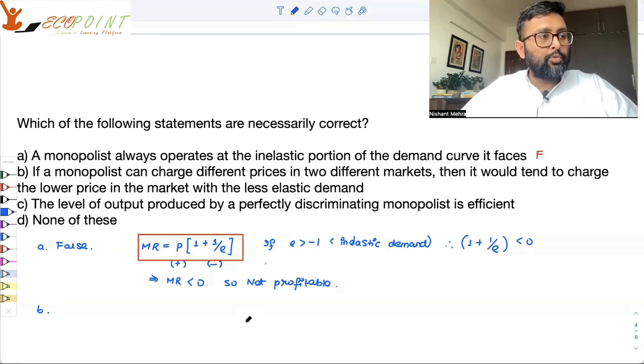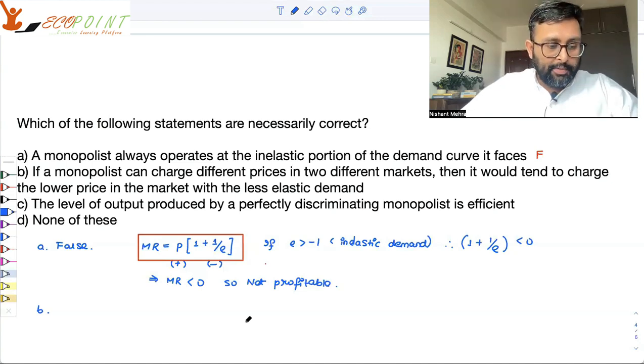Consumers do not have more substitutes available to them in the market. That is what is meant by less elastic demand. Monopolists will know that these consumers have very urgent demand. They do not even have substitutes available. He can actually charge the price very high as compared to his cost. So he will be charging more in the market which is having less elastic demand. So this statement is also false.